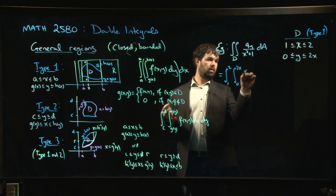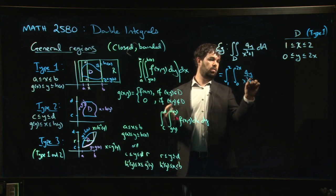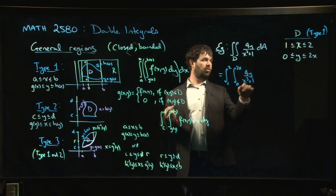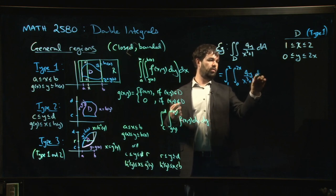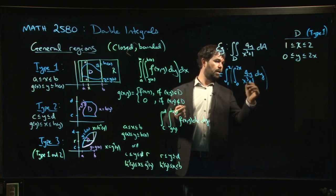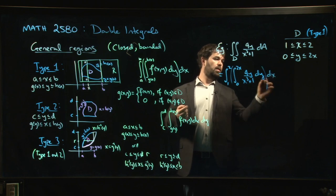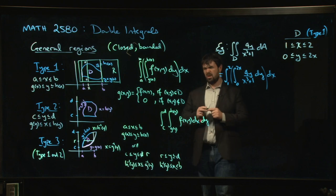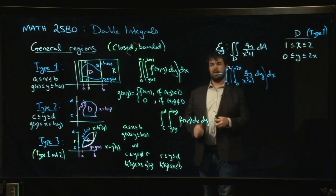Y goes from 0 to 2x. We put down our function 4y/(x³+1). These limits depend on x because we're integrating first with respect to y. Once we've done the y integral, we'll have something that depends only on x, and then we'll be able to do the integral with respect to x. That gives you the setup.